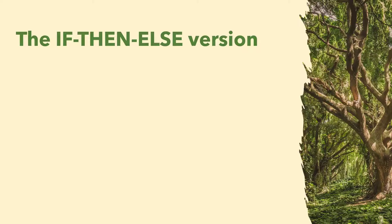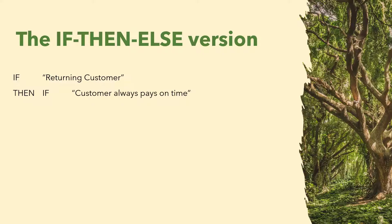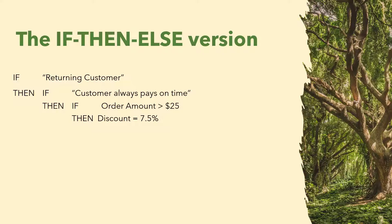To figure it out, let's structure the information using the if-then-else construct first. If you have a returning customer, then you also need to know whether they always paid on time. If yes, they will get a 7.5% discount, but only on orders over $25. So we have three conditions to check: returning customer, customer always pays on time, and order amount is greater than $25.